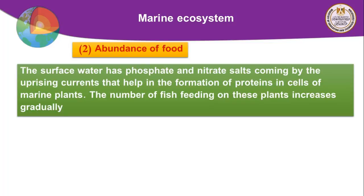When reproduction occurs, the number of fish increases gradually. The presence of upwelling currents with phosphates and nitrates makes a region a good fishing region.